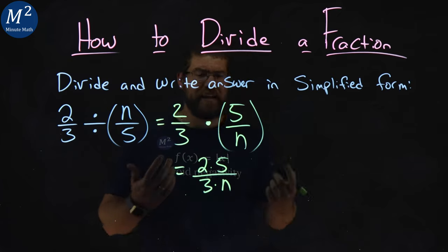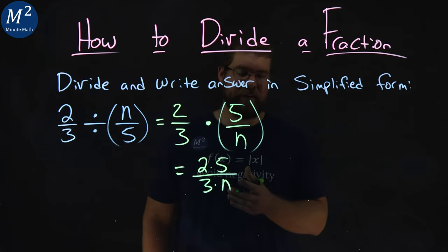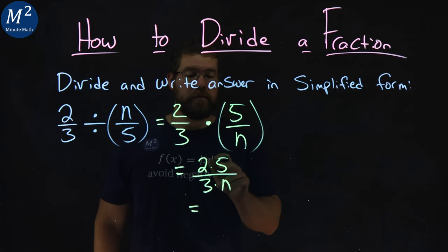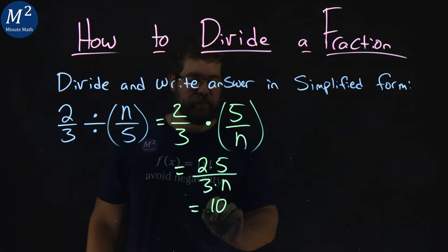Now, I don't see any common factors here. Three doesn't go into two and five, and n clearly doesn't. So multiply across. Two times five is ten. Three times n is three n.